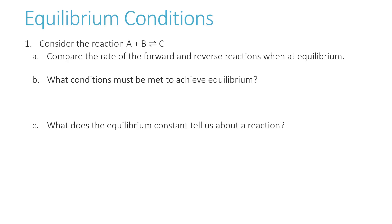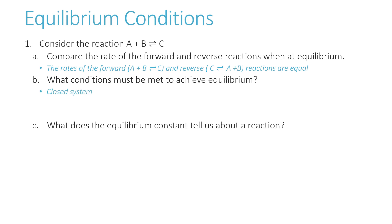The first question is asking about equilibrium. Consider the reaction A plus B yields C. We need to compare the rate of the forward and reverse reactions when at equilibrium. We've reached equilibrium when the conversion of reactants into products and products back to reactants — the forward and reverse reactions — have equal rates. To achieve equilibrium, we need a closed system with a reversible reaction occurring.